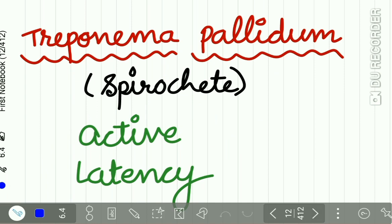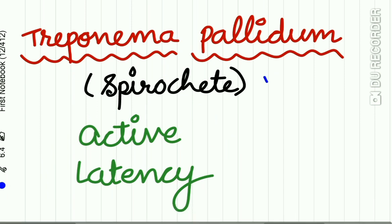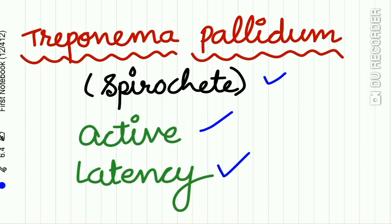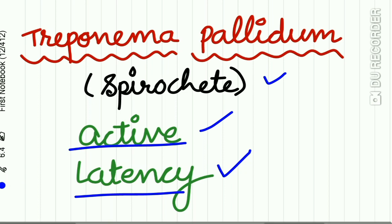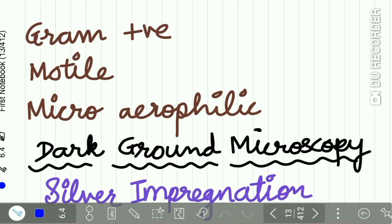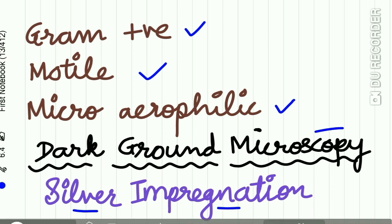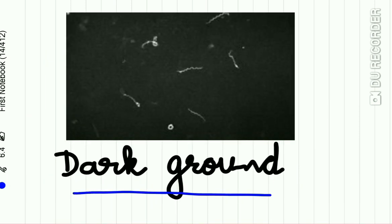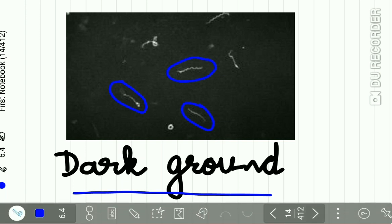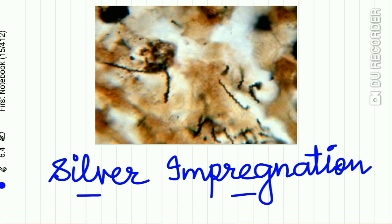The causative organism is Treponema pallidum, which is a spirochete characterized by episodes of active disease interrupted by periods of latency. Treponema pallidum is a gram-positive motile micro-aerophilic organism. It can be visualized by dark ground microscopy and by silver impregnation or silver staining. These spiral delicate organisms can be seen clearly under both methods.